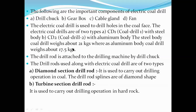The steel body coal drill weighs about 21 kilograms, whereas the aluminum body coal drill weighs about 17.5 kilograms — a reduction of roughly 3.5 kg. A heavier machine requires more effort from the worker and increases fatigue. The drill rod is attached to the drilling machine by the drill chuck. You might be asked in examinations: what is the purpose of the drill chuck? — its purpose is to attach the drill rods to the drill machine.